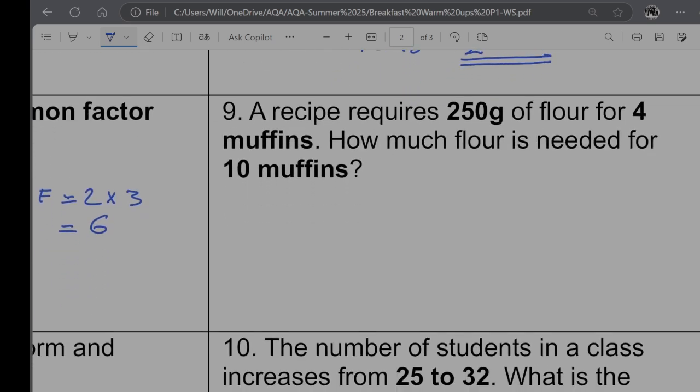Question 9, a recipe requires 250 grams of flour for 4 muffins. How much flour is needed for 10 muffins? So I'm going to use a bit of a ratio here. I'm going to say that 4 is going to be equal to 250, and I want to get up to 10. So 2 lots is going to be half of this, 125. So 10 lots is going to be found by times in that by 5. So if I do 125 times by 5, that's going to give me 625.